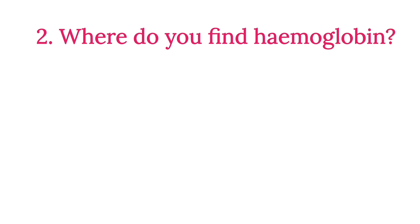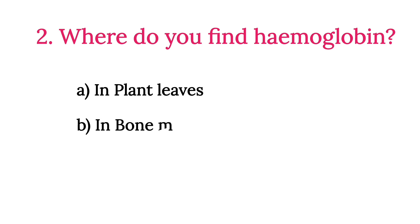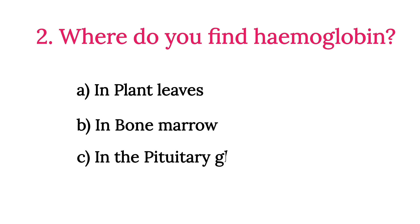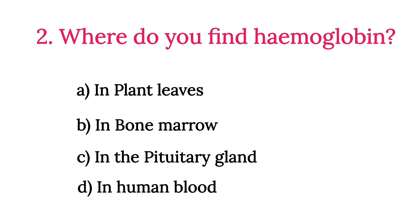MCQ Number 2: Where do you find Hemoglobin? Option A: Lymph nodes. Option B: Bone Marrow. Option C: Liver. Option D: Human Blood. So the correct option is Option D, Human Blood.